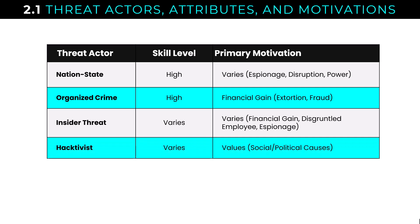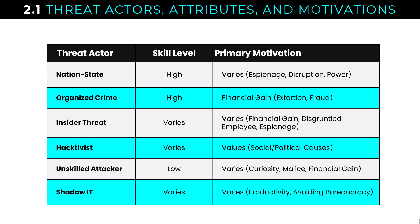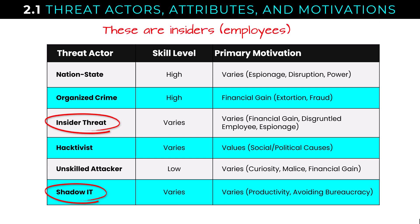The hacktivist's skill level can vary — they're focused on social or political causes. A great example of a highly skilled hacktivist organization is the group simply known as Anonymous. The unskilled attacker is very low in skill and may be out for financial gain, but more often it's malice — trying to hurt or embarrass an adversary — or just curiosity about the world of hacking. Shadow IT skill level varies from a business person buying cloud storage to a senior developer using a credit card to buy AWS time to accelerate development. Remember: insider threat and shadow IT are the two that are inside the organization.